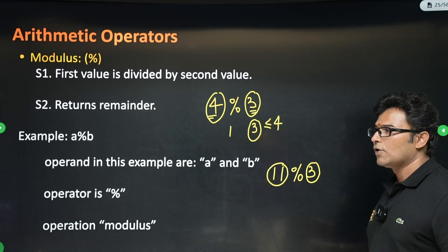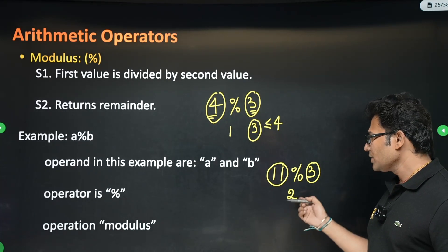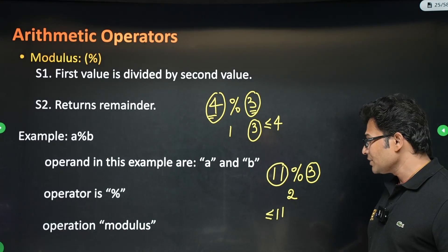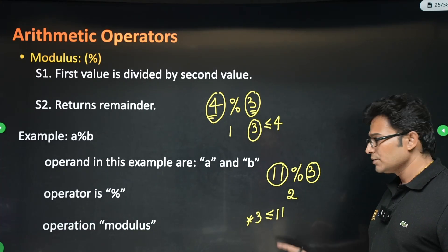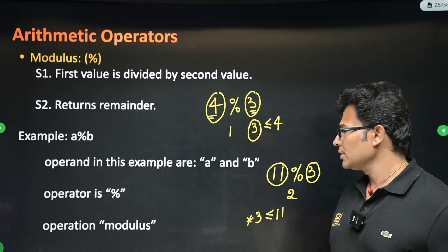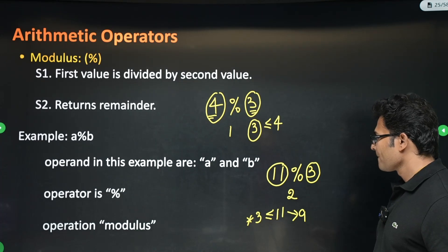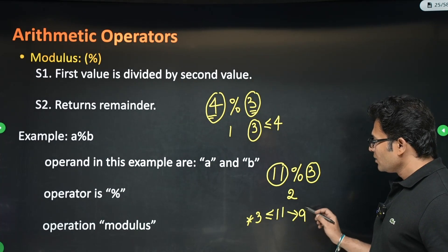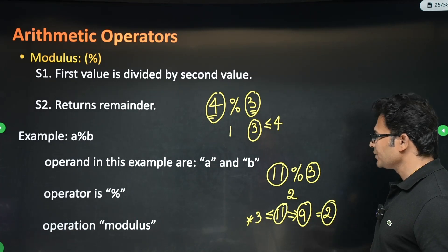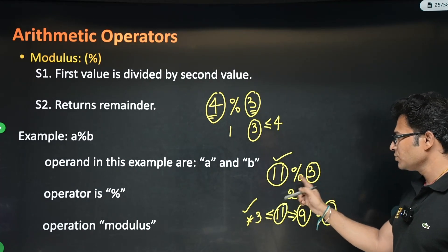The remainder of 11 divided by 3 is 2, because 3 threes are 9, and there are 2 extra (10 and 11). Another way: find the largest multiple of 3 less than or equal to 11, which is 9. Then 11 minus 9 equals 2. I prefer this method because with positive numbers it's easy, and it also helps when negative numbers are involved.